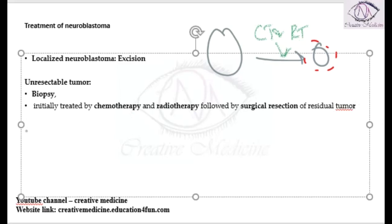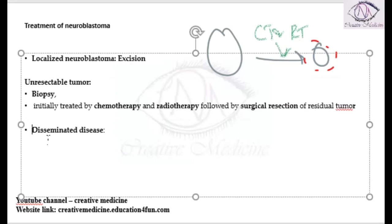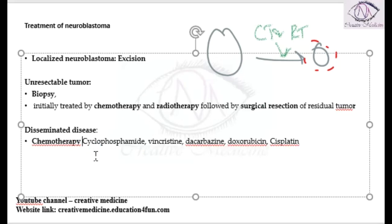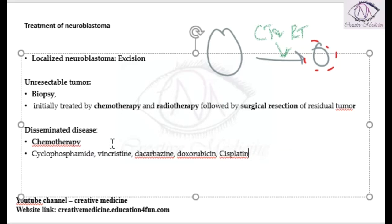If it is a disseminated disease — already spread to many parts of the body — then chemotherapy is the treatment of choice. This chemotherapy can be given with the help of drugs like cyclophosphamide, vincristine, dacarbazine, doxorubicin, and cisplatin.